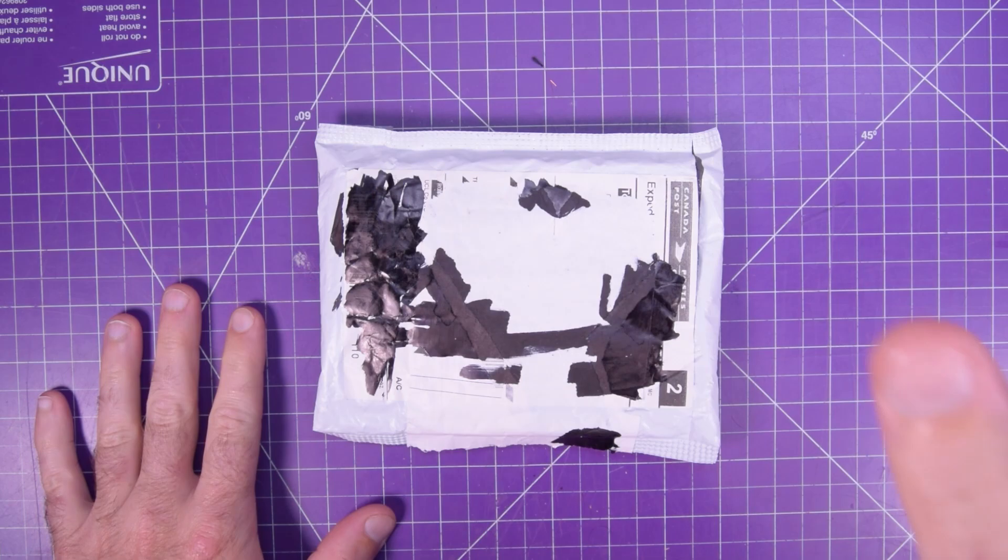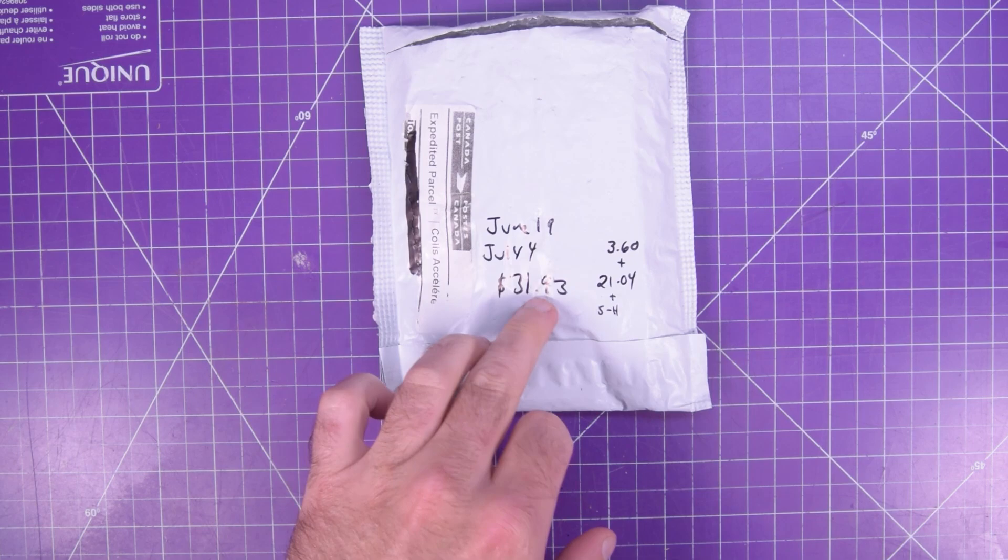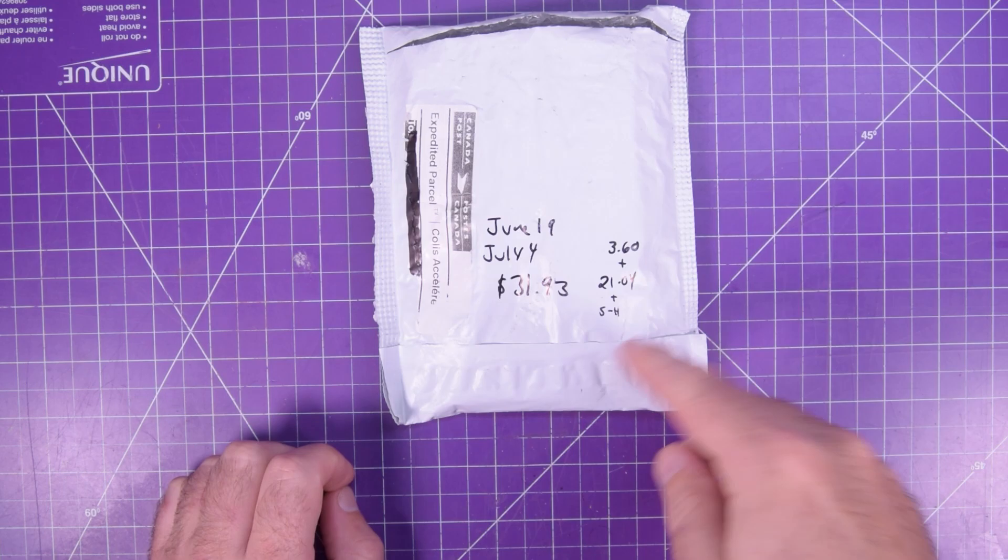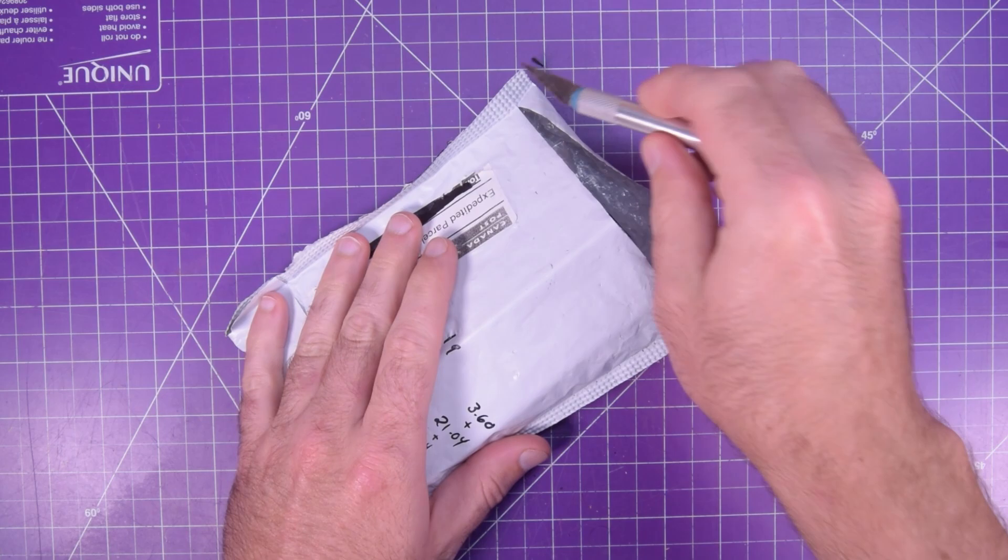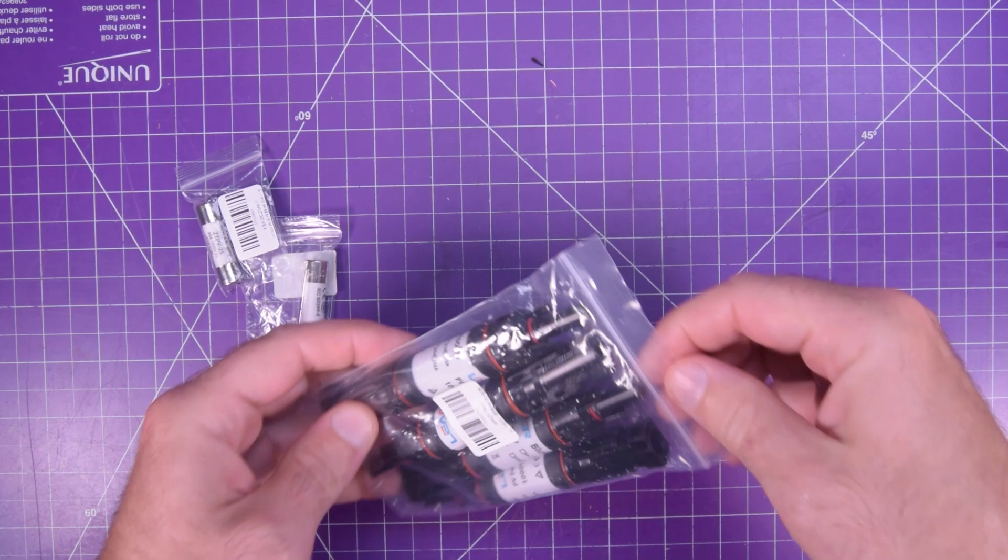Totally not editor Dan from the future here reshooting this because the footage got deleted. Of course not. How could that be? This was ordered June 19th, arrived July 4th, $31.93. But that's $2.60 plus $2,104 plus the shipping. That gives you about an idea of what's in here. Let's just cut this bag open. Oh yeah, open. Ooh, what a surprise. Oh my God. Oh, and some of these. Great.